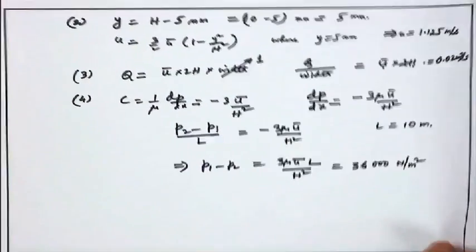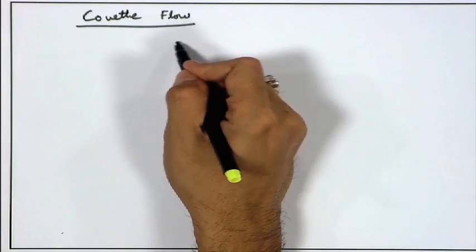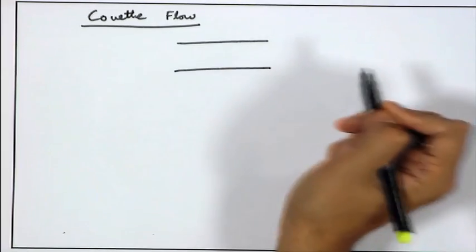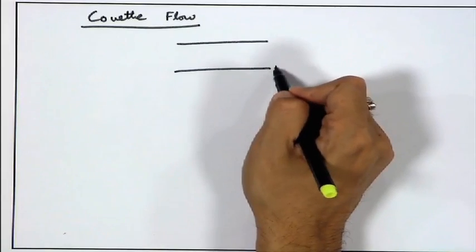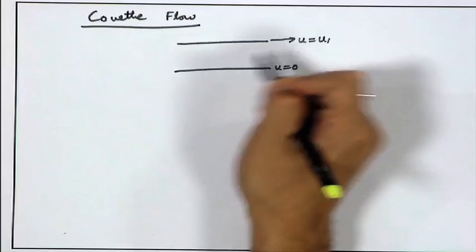We will consider a second example of exact solution of the Navier-Stokes equation through something which is very important in fluid mechanics. This is called Couette flow. Consider two parallel plates with relative motion — the bottom plate is stationary and the top plate is moving towards the right with a velocity u1.